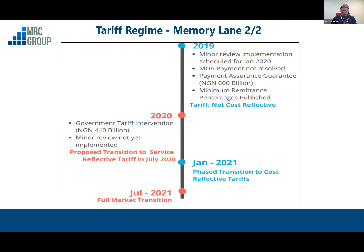In 2020, COVID-19 happened and the oil price crisis meant budgets had to be adjusted to reflect the drop in oil prices. There is now the thinking that the government cannot continue to subsidize the tariff for the sector. What should happen is that distribution companies should be able to charge tariffs that reflect the service they deliver — hence the service-reflective tariffs. From next month, the expectation is that you and I will be paying accordingly.